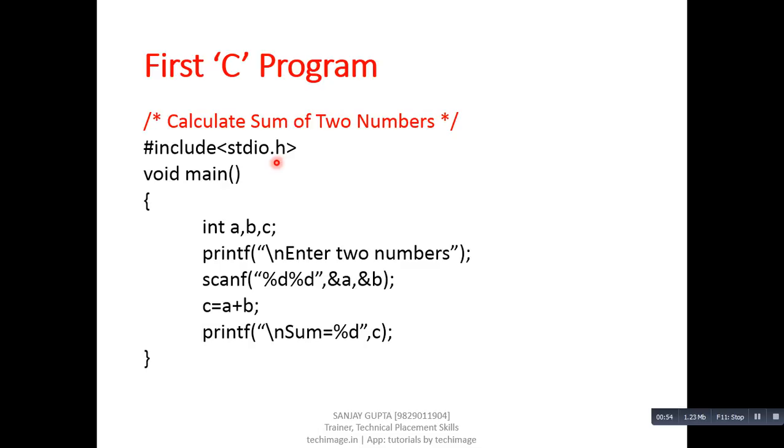Header files are the predefined files which contain declarations of the predefined functions. As I discussed in the first tutorial, C is a function-oriented programming language. Function-oriented means we have two types of functions: first is predefined, second one is user-defined.